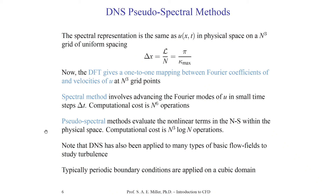Spectral methods evaluate the nonlinear terms in the Navier-Stokes equations, while the other terms are evaluated with traditional methods and marched in time with, perhaps, a Runge-Kutta scheme. Using a pseudospectral approach, we would only have N-cubed log N operations. By combining traditional finite differencing and spectral theory through Fourier transforms, we can reduce the computational cost from N⁶ down to N³ log N.